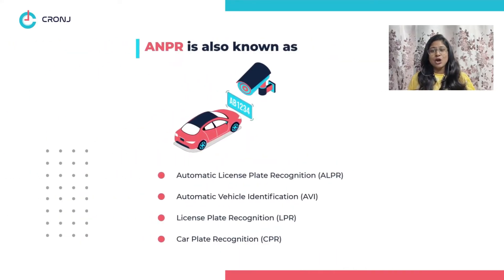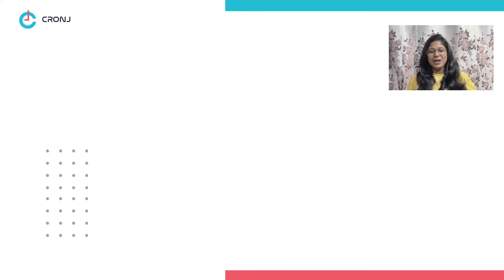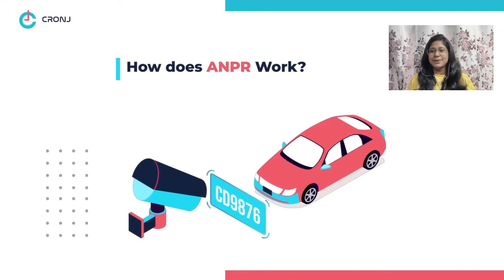ANPR also goes by many other names. These include Automatic License Plate Recognition or ALPR, Automatic Vehicle Identification or AVI, License Plate Recognition or LPR, and Car Plate Recognition or CPR. Now, how does an ANPR work, and what are the various processes involved behind its functionality?